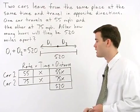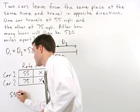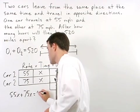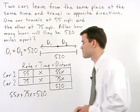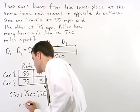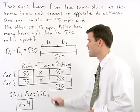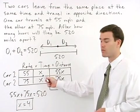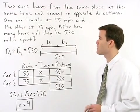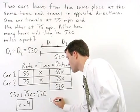So that our equation will read 55x plus 75x equals 520. And solving from here, we get x equals 4. Since x represents the time for each car in our chart, we know that our cars will be 520 miles apart after 4 hours.